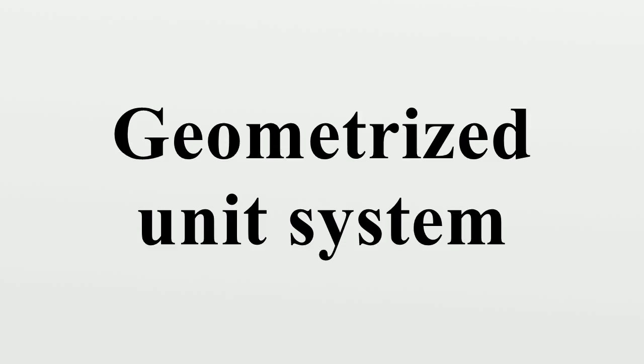A geometrised unit system or geometric unit system is a system of natural units in which the base physical units are chosen so that the speed of light in vacuum, c, and the gravitational constant, G, are set equal to unity.